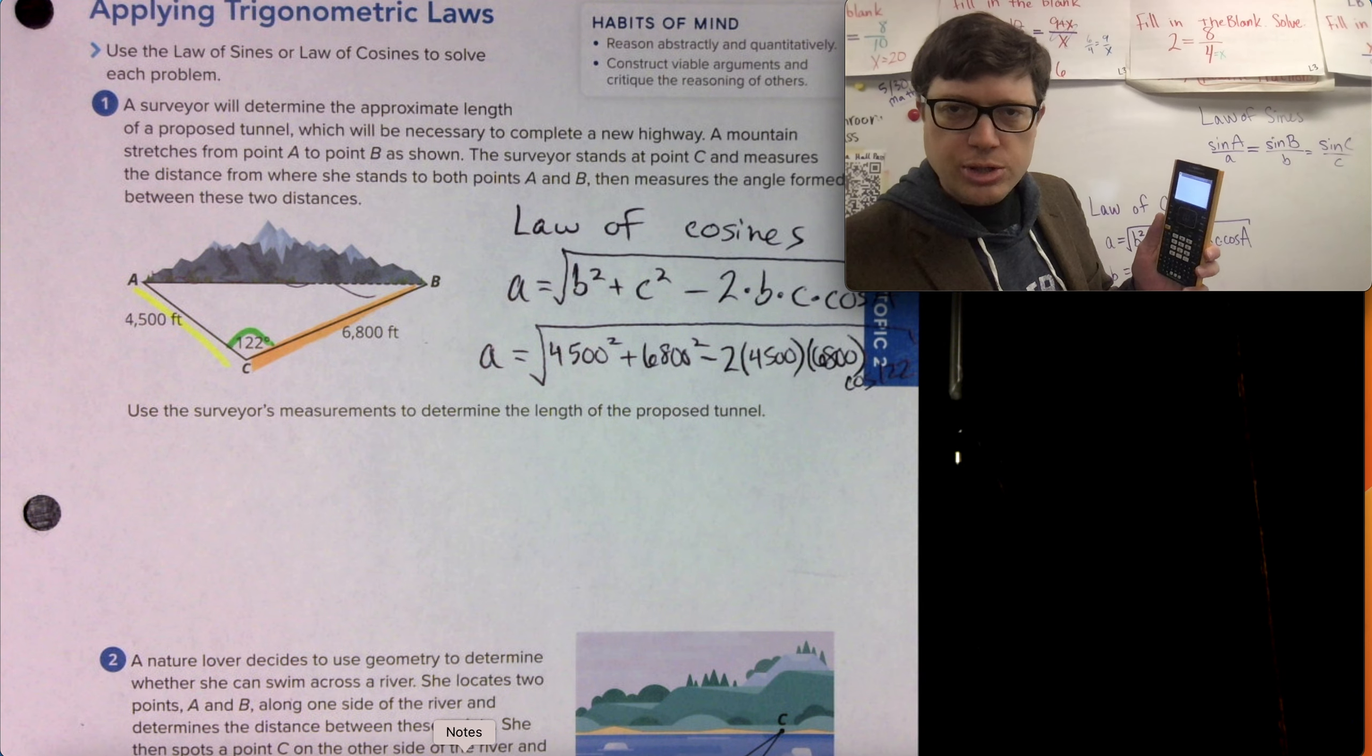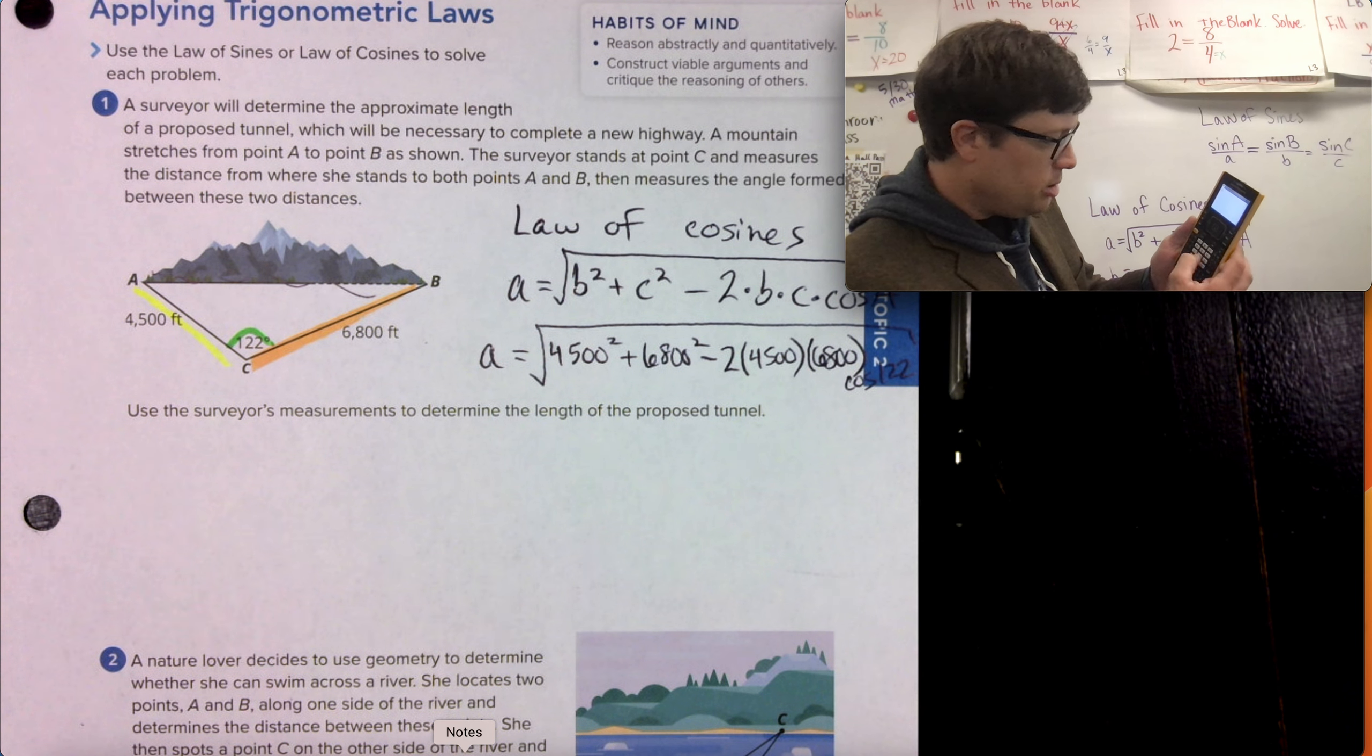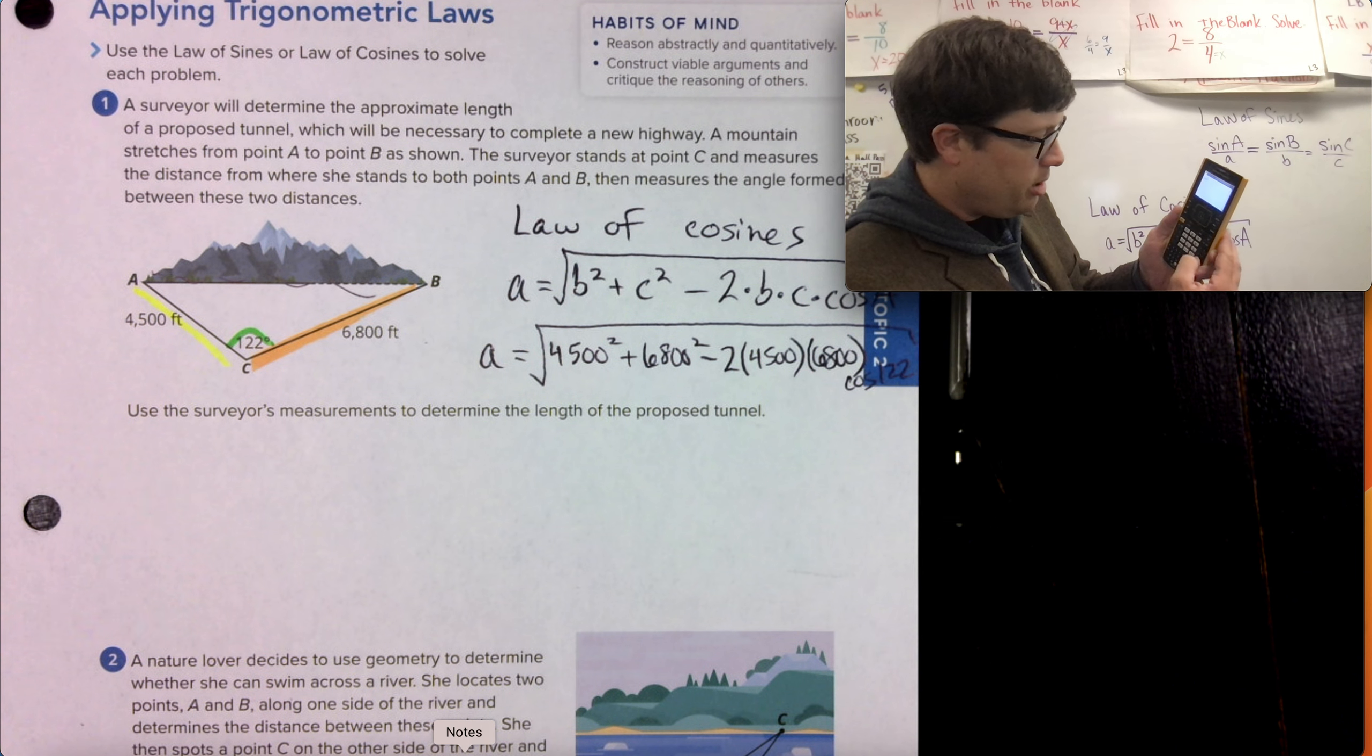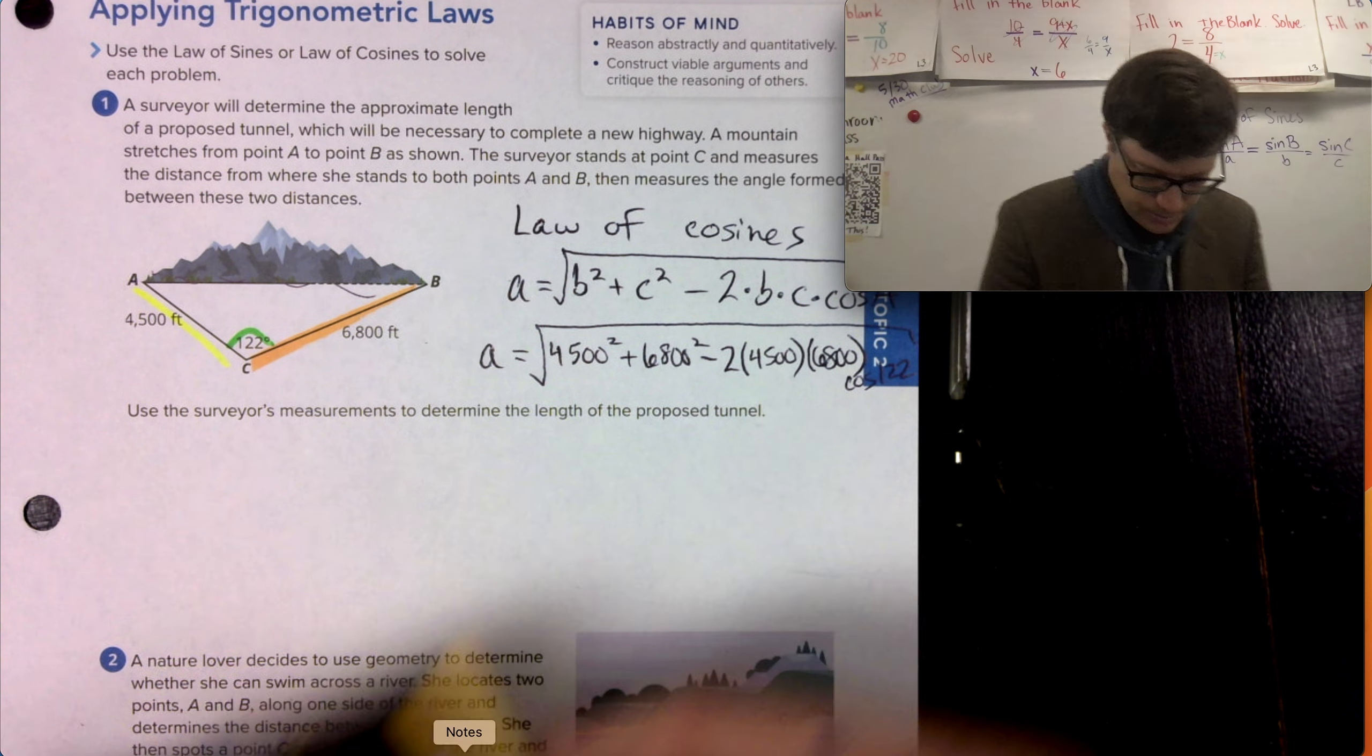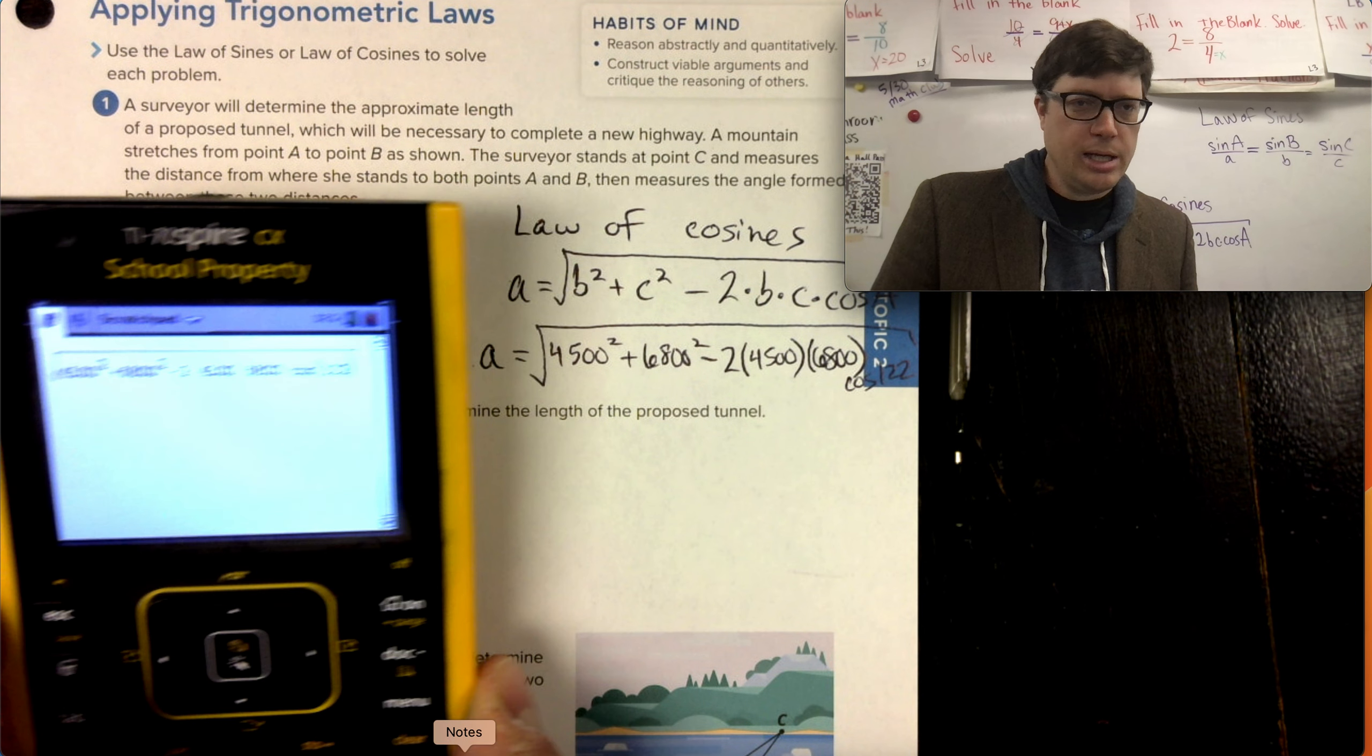Okay. I'm going to type it in here on the screen, and then I'll go ahead and put it on the document camera. I want that to be visible still. So maybe like that much. Okay. So I have square root 4,500 squared plus 6,800 squared minus 2 times 4,500 times 6,800 times cosine of 122 degrees.